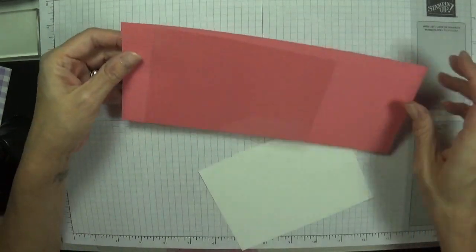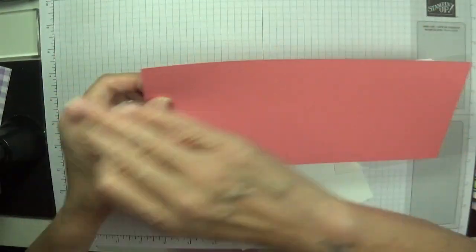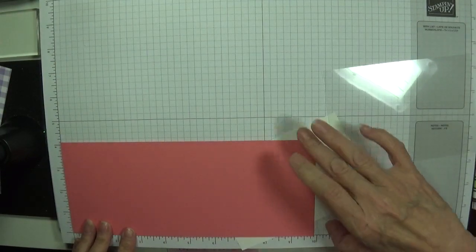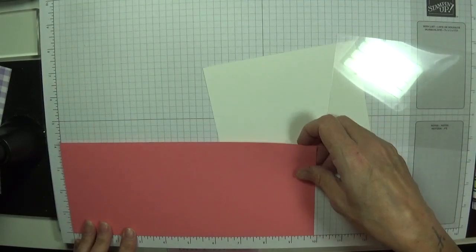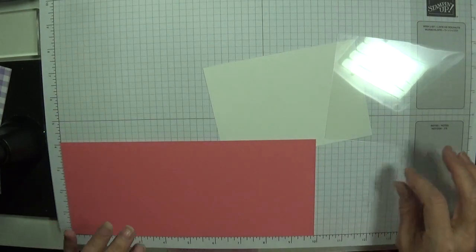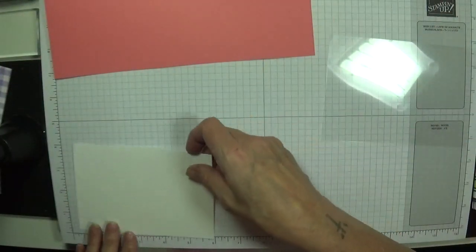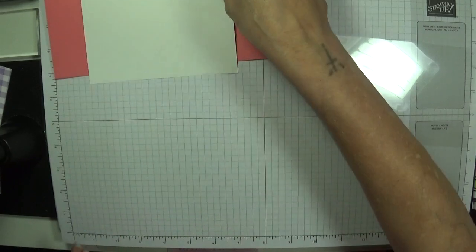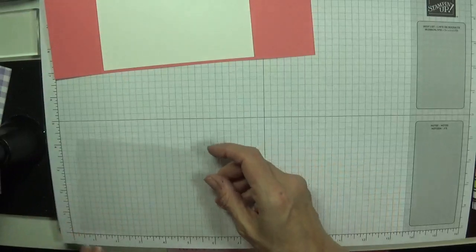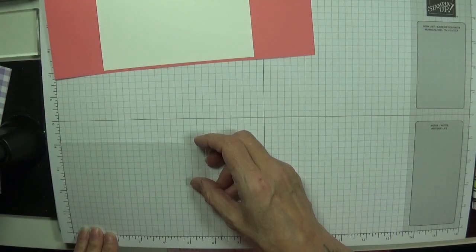Cardstock wise you're going to need this piece of Flirty Flamingo. I've got this in the centre and it was eight and an eighth by nine and seven eighths. This is just three and seven eighths by five and five eighths going on the inside. This is our piece of acetate that is the front, four and one eighth by five and seven eighths.